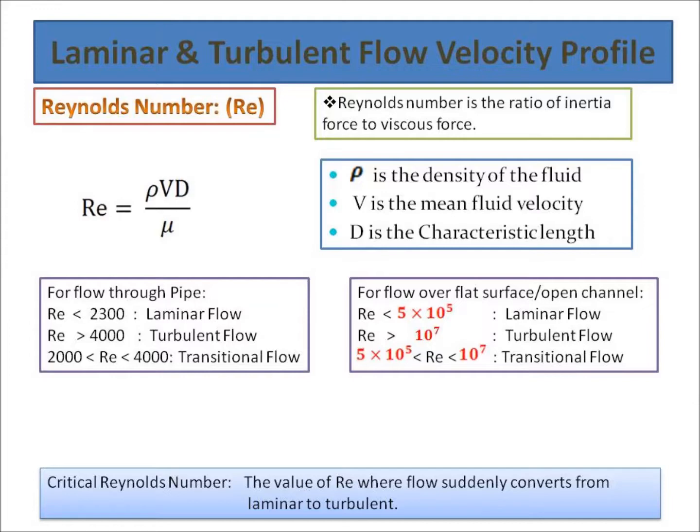While for the flow over the plate or external flow, if Reynolds number is less than 5×10⁵ the flow is laminar. If it is greater than 10⁷ the flow is turbulent, and in between 5×10⁵ to 10⁷ the flow is transitional.